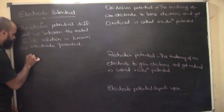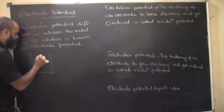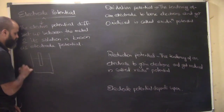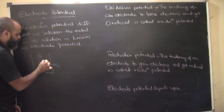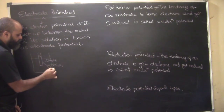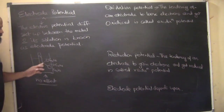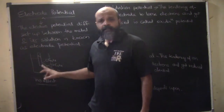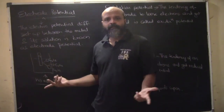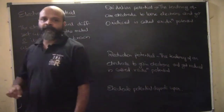Let us take an example. Let us say we have a solution which contains copper ions, and here we have a copper electrode which is dipped in it. Now, what can happen is that these copper ions can collide and just move on without any effect — no potential will be set up. There is a possibility that the ions might strike the electrode without causing any reaction, for example when we have inert electrodes. So no electrode potential is set up.